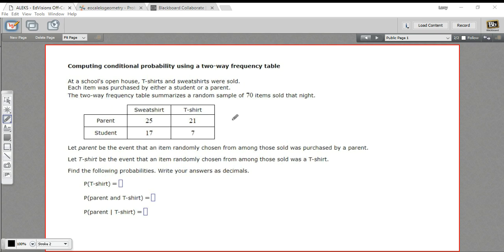And then we're being asked to compute some of these probabilities. So if we look down here, we have this notation P, that stands for probability, parentheses, or of, t-shirt. So what that's asking is what's the probability that some randomly chosen item of clothing from this group of 70 items that was sold is a t-shirt?